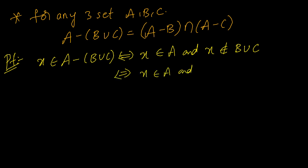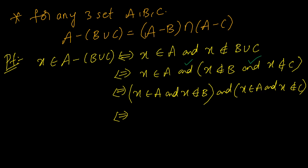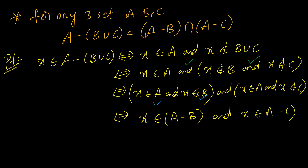Applying 'does not belong to' to B union C: union changes to intersection, so x does not belong to B and x does not belong to C. We also have x belongs to A from outside. So we get: (x belongs to A and x does not belong to B) and (x belongs to A and x does not belong to C).